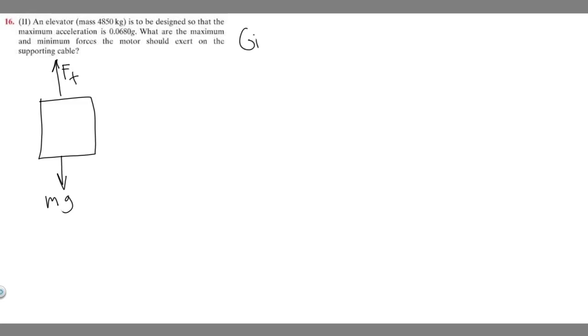First what we should do is write down our given. We're told that the mass of the elevator, m, is 4,850 kilograms, and the maximum acceleration is 0.0680 g.